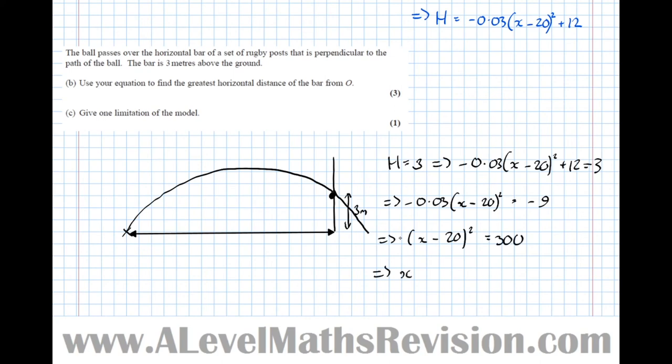Which means that x minus 20, if we square root both sides, equals plus or minus root 300, which is equal to root 100 root 3 equals plus or minus 10 root 3.